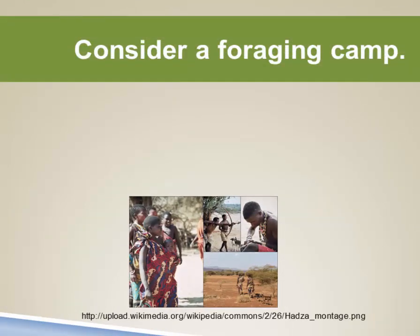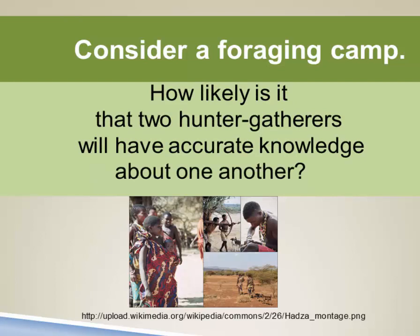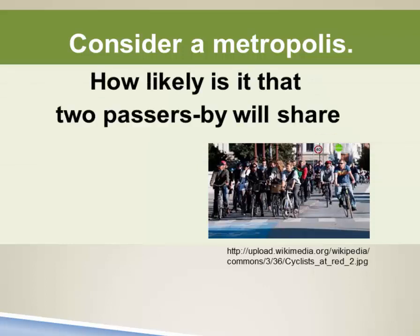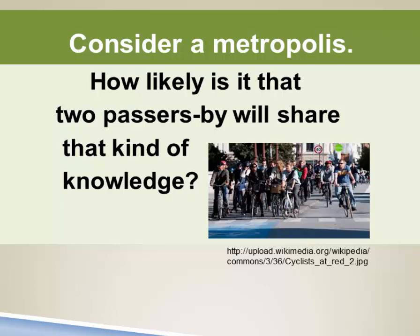Consider indirect reciprocity again in the context of a foraging camp. In a Hadza camp of about 30 individuals, there's a high likelihood they'll have accurate knowledge about one another's behavior and reputation. But in a large metropolitan area, two strangers passing by have very low likelihood of that kind of knowledge. A scandal broke out in the aftermath of the NYPD altruist story when reporters revealed the homeless man was not in fact homeless, and a follow-up story reported he sold the boots for cash — explaining it wasn't safe to wear such expensive boots as someone might murder him for them.